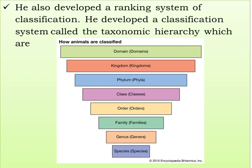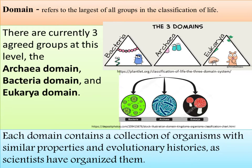He developed a classification system called the taxonomic hierarchy, which includes: domain, kingdom, phylum, class, order, family, genus, and species. Domain refers to the largest of all groups in the classification of life.